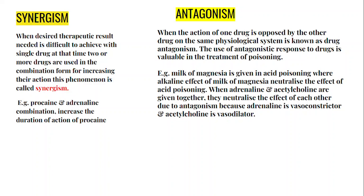Antagonism is when the action of one drug is opposed by another drug on the same physiological system. Even though it sounds negative, it is actually useful — antagonistic responses are valuable in the treatment of poisoning. For example, milk of magnesia is given in acid poisoning, where its alkaline effect neutralizes the acid. When adrenaline and acetylcholine are given together, they neutralize each other due to antagonism, because adrenaline is a vasoconstrictor and acetylcholine is a vasodilator.